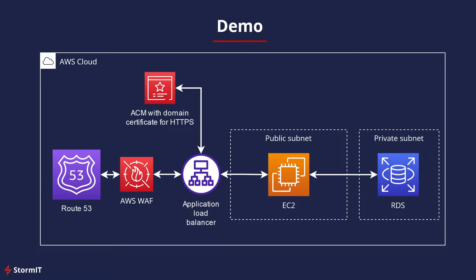Here we have our architecture for today. We will be using an RDS instance with EC2 — this is a very basic LAMP stack. We also have an Application Load Balancer before the EC2. If you want to deploy AWS WAF in an AWS architecture, you need to use CloudFront before EC2 or an Application Load Balancer before EC2. You are not able to deploy AWS WAF on EC2 alone. We will also use ACM with a domain certificate for HTTPS with the Application Load Balancer, and also Route 53 DNS with a domain name.